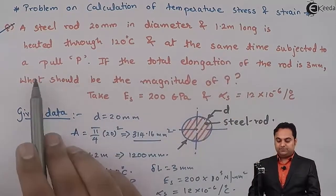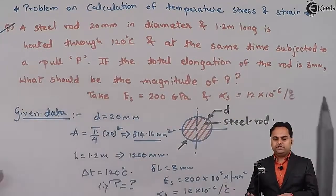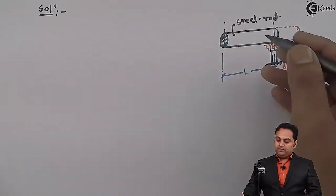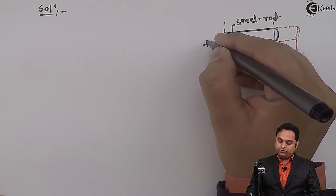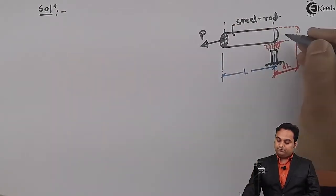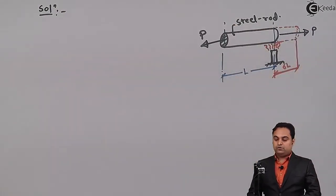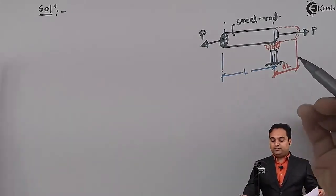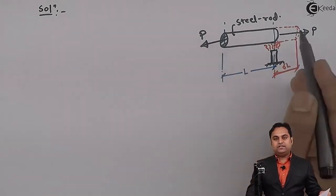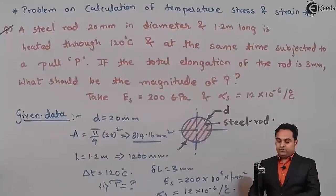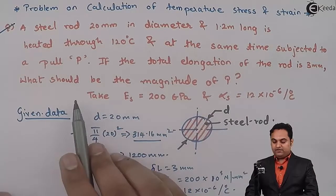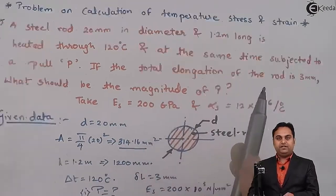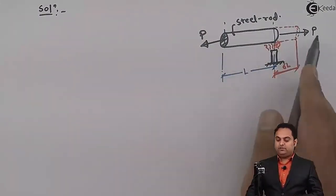Now in the problem, they have given that a steel rod 20 mm in diameter and 1.2 meter long is heated through 120 degree Celsius. And at the same time subjected to pull P, which is, I can say that it is heated at the same time this rod is being pulled. So when it is subjected to heating as well as the pull type of force, there is a total elongation which is 3 mm and we should find the magnitude of P that is how much is this applied load.